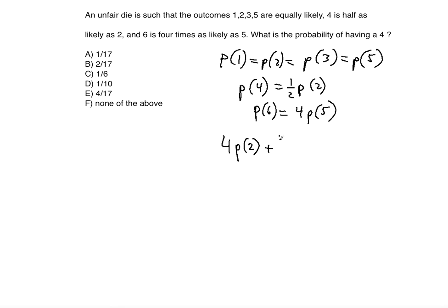Then we add (1/2) · P(2) for the probability of four, plus 4 · P(2) for the probability of six — four times P(2) instead of P(5) because P(5) = P(2), so we substitute accordingly. That's why we have 4 · P(2) for P(6).